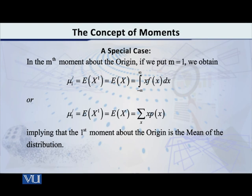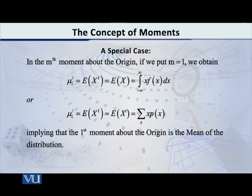Now let us look at two special cases. First special case: for the m-th moment about the origin, if we put m equal to 1, we get mu-1 prime, which equals the expected value of x raised to 1, that is, the expected value of x. And the expected value of x is simply the mean. So the first moment about the origin is the mean of the distribution.